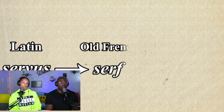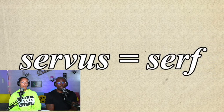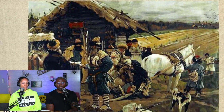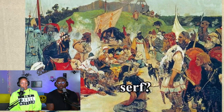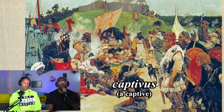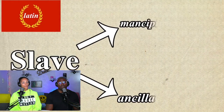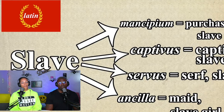By the late Middle Ages, 'servus' was almost exclusively used to refer to serfs, not slaves. In fact, the modern English word 'serf' comes from the Latin 'servus.' Since serfdom in medieval legal terms was never actual slavery, a new word had to be adopted. Candidates included 'captivus,' the Latin word for a captured person, which was sometimes used alone or combined with 'servus.' However, what eventually became most common was not a Latin word but an ethnonym.